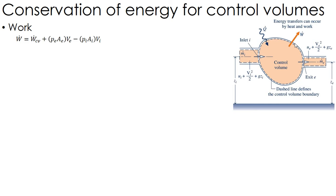There are actually two types of work in a control volume. The first is the work of the control volume itself — you may have a spinning blade, something along those lines. That's the work output. We also have some work just due to the fact that we've got fluid flow. At the exit, the control volume is pushing fluid out through pressure, doing work on the surroundings, while what's coming in is doing work on the control volume.